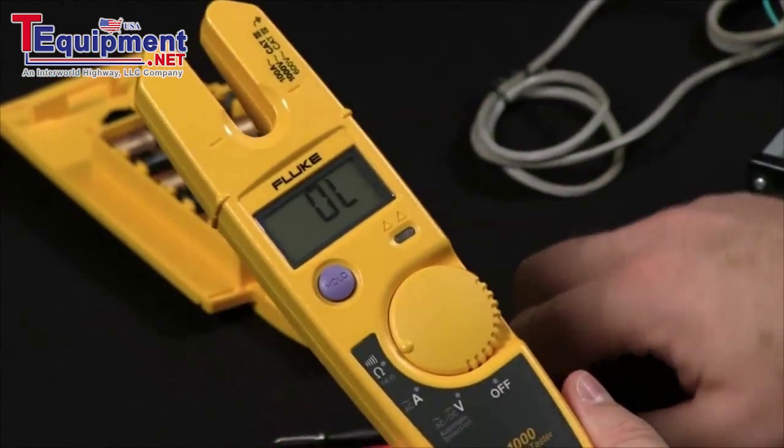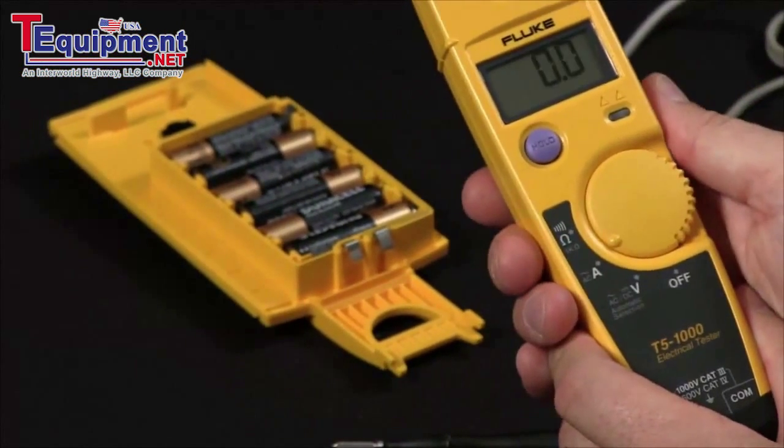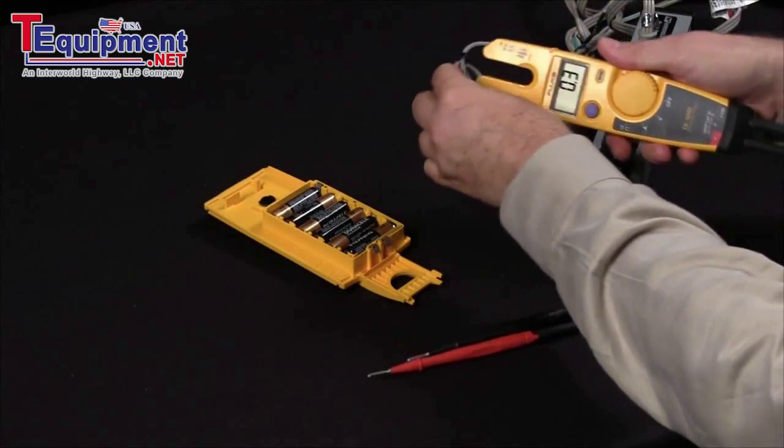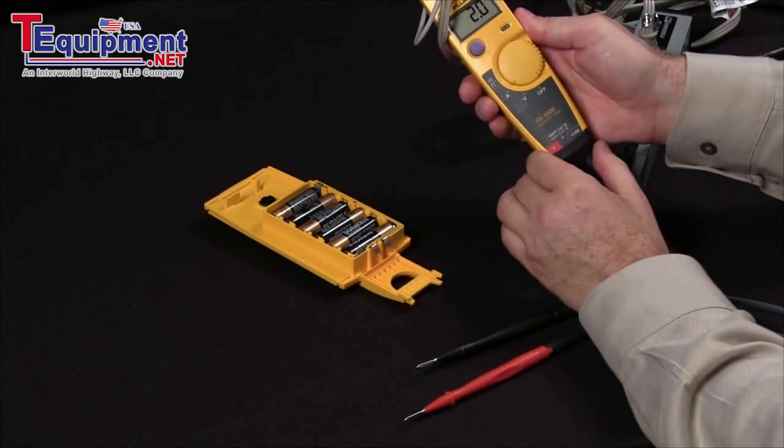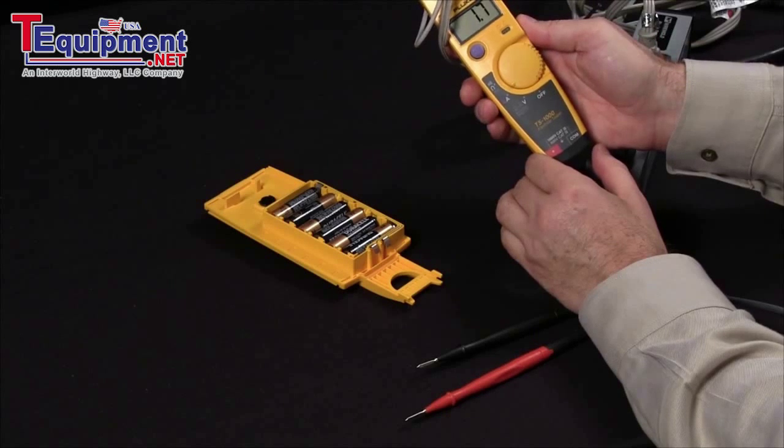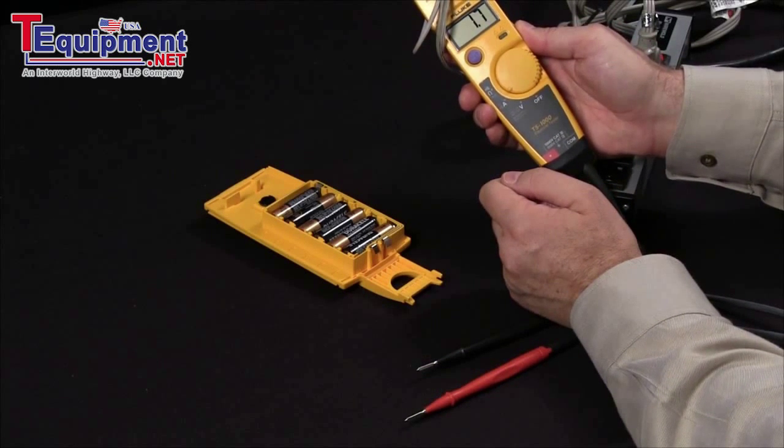To take a current measurement, simply move the dial position to measure current, and now you can slide your open jaw design around your current source, and right there we're reading 1.7 amps AC.